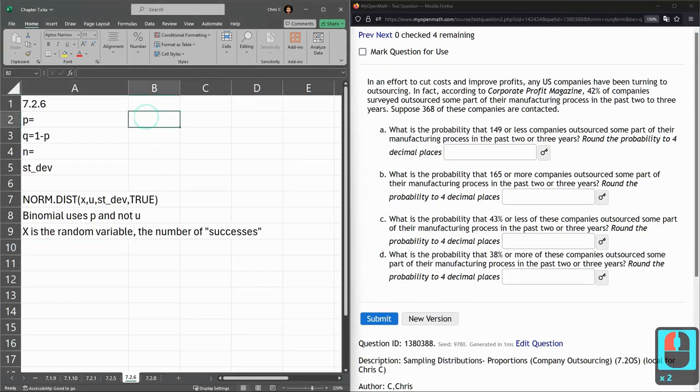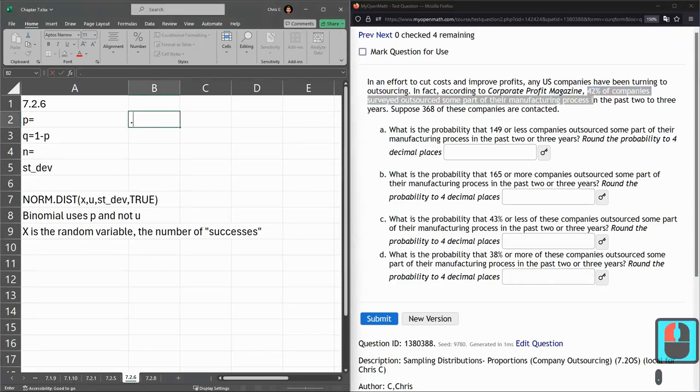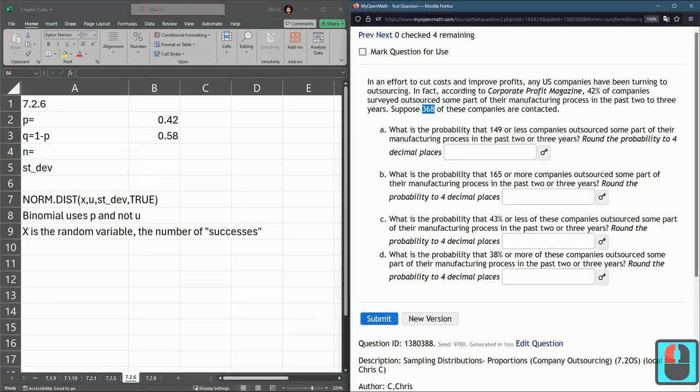Let's go ahead and type in on this problem. P is the probability of success. So 42% of companies surveyed outsourced, so it's 0.42 is P. Now Q is the opposite. So Q equals 1 minus P. So 1 minus B2. N is the number of samples, so 368.